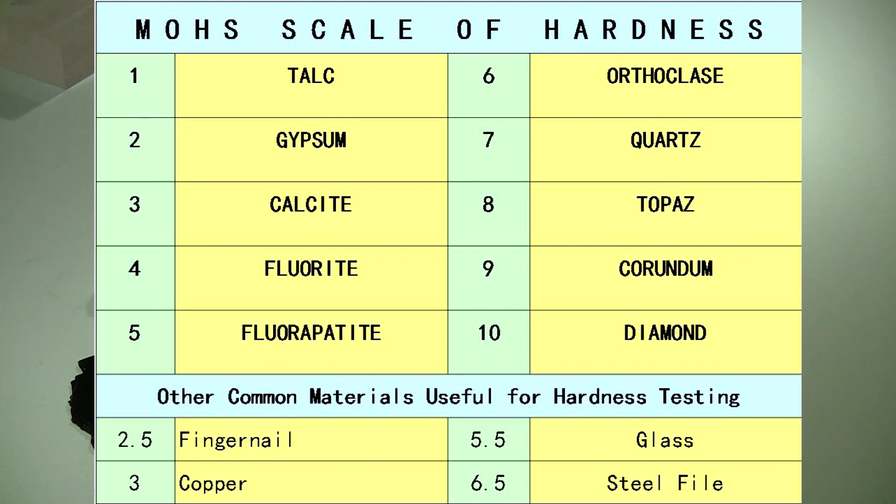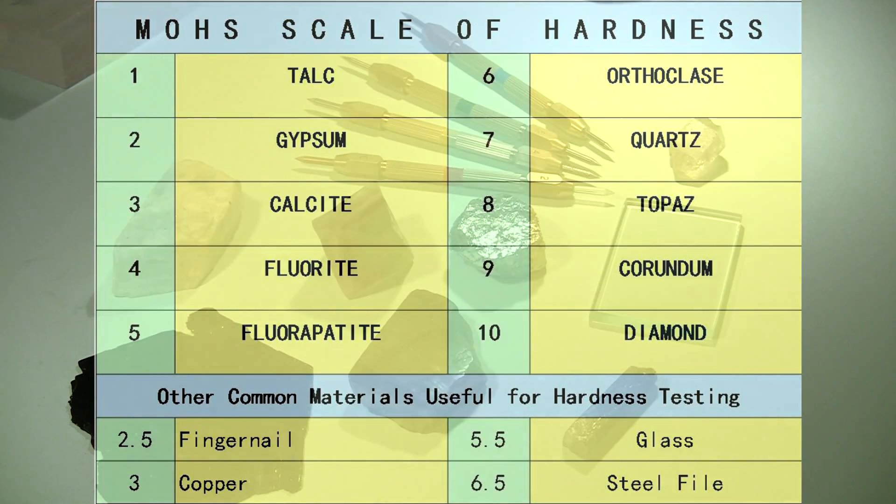In addition, there are other common materials useful for hardness testing. The fingernail has a hardness of about 2.5, copper comes in at 3, glass is 5.5, and the steel of a file is 6.5.